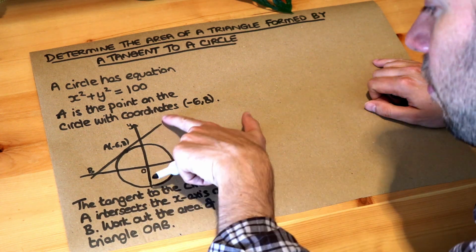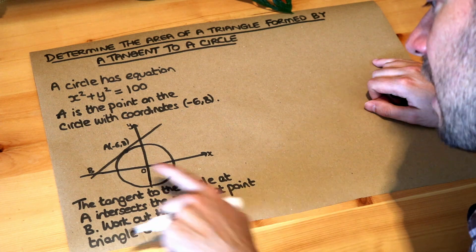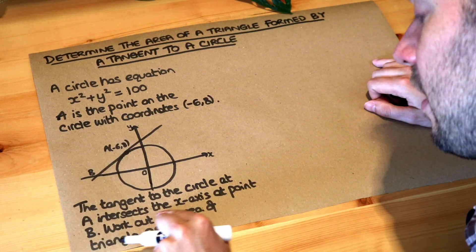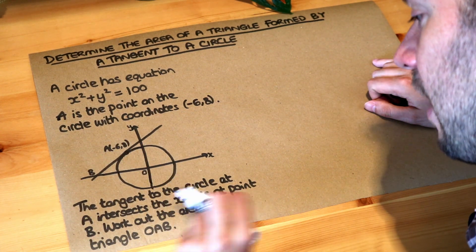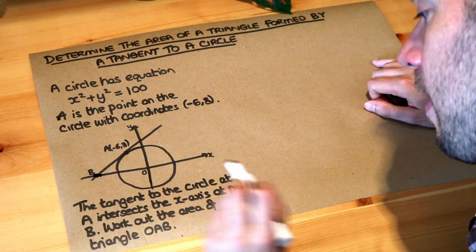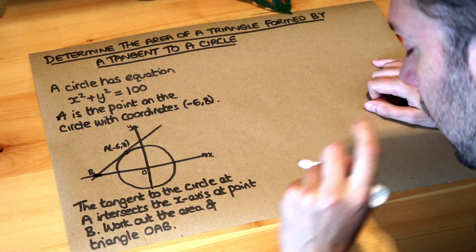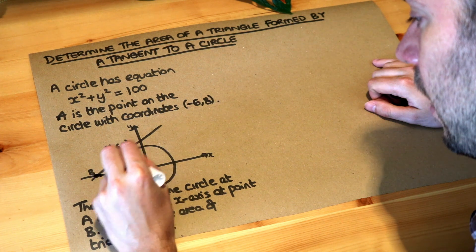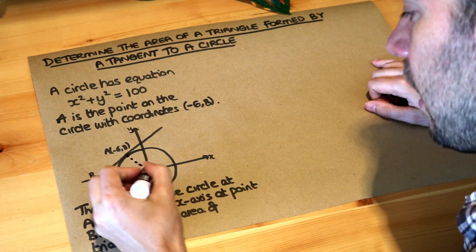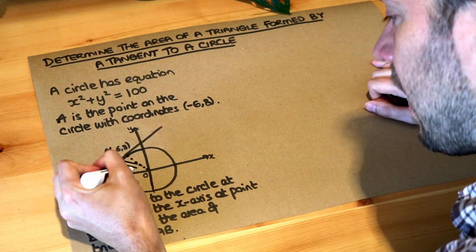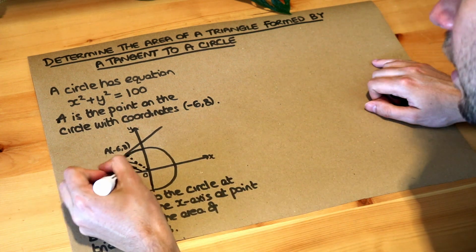A tangent to the circle, this line here, at A, this point here, intersects the x-axis at the point B, so here. Work out the area of the triangle OAB. So if we draw a line from O to A, it's OAB, so it's the area of this triangle here.